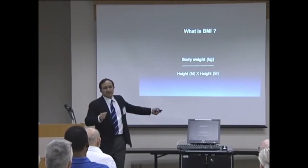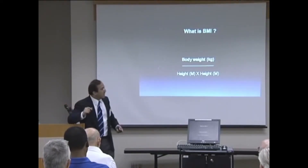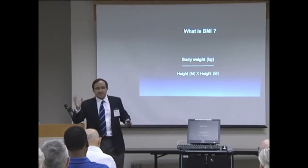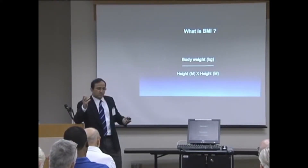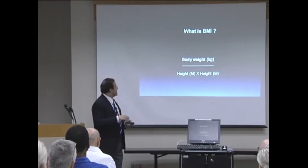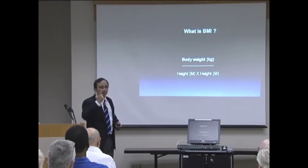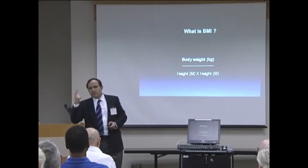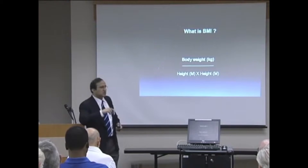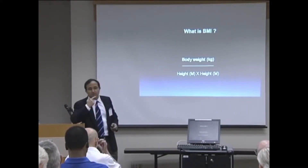What is BMI? There is a calculation based on your body weight and your height. Body weight in kilograms — 100 kilograms is 220 pounds, so if you're 220 pounds you're 100 kilograms. Your weight divided by your height in meters — if you're six feet tall, that is 1.84 meters. You divide by your height in meters twice to get your BMI.